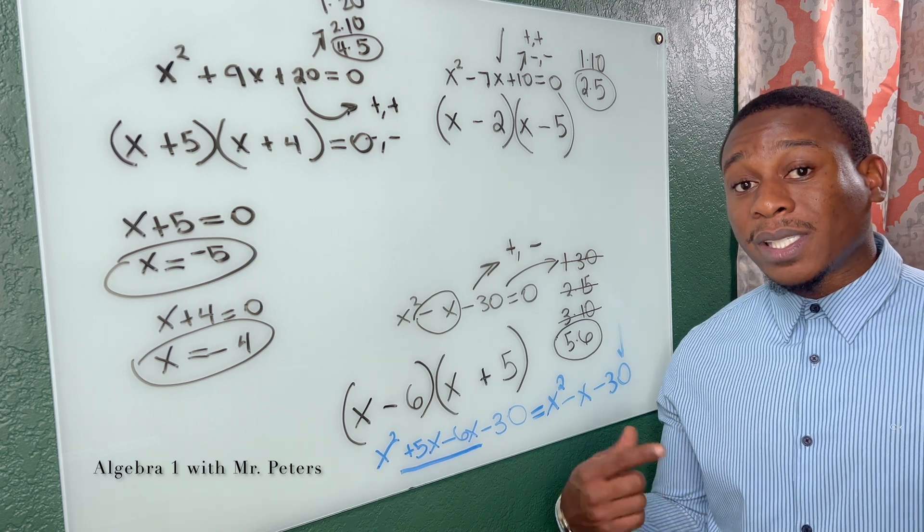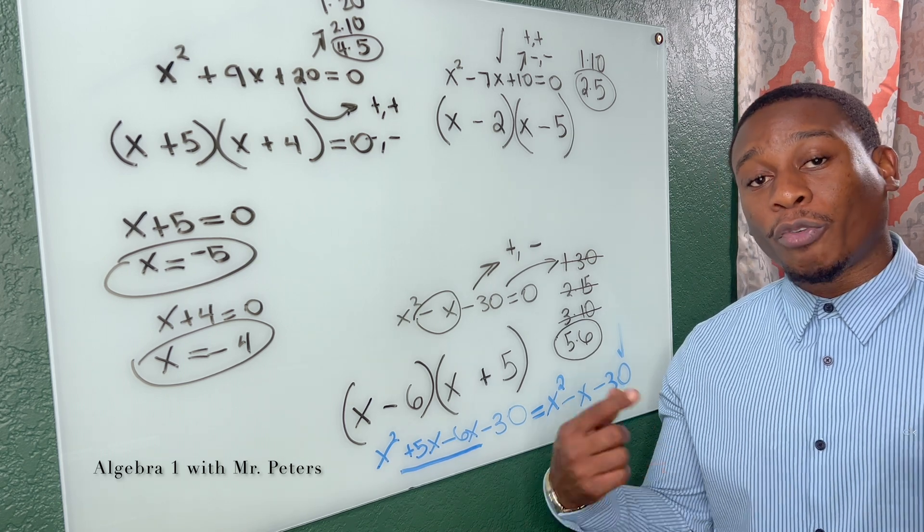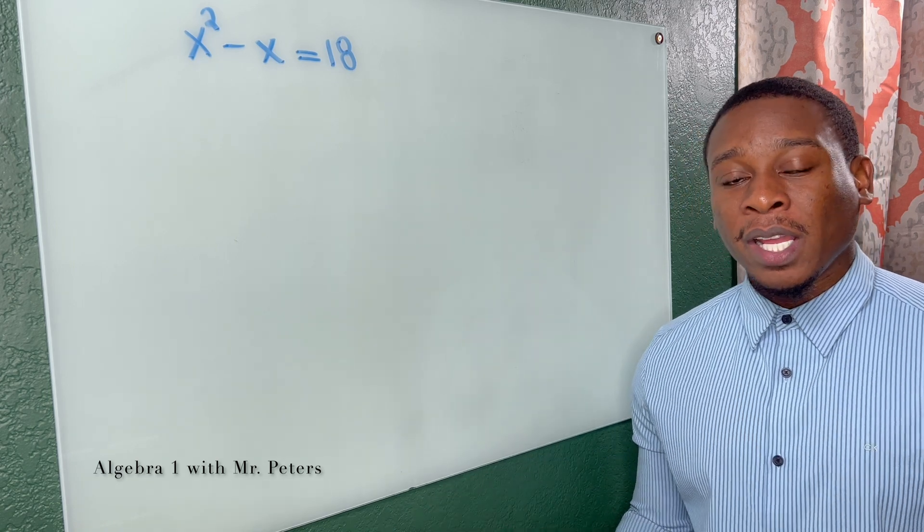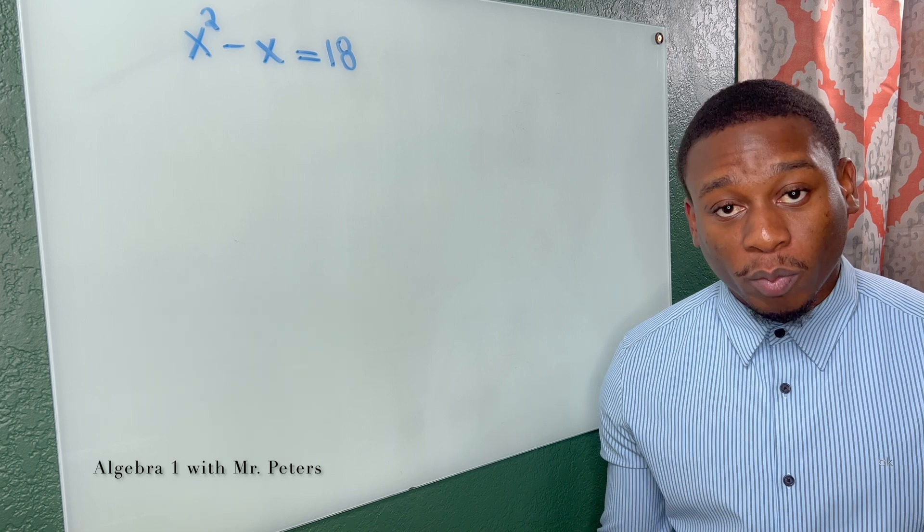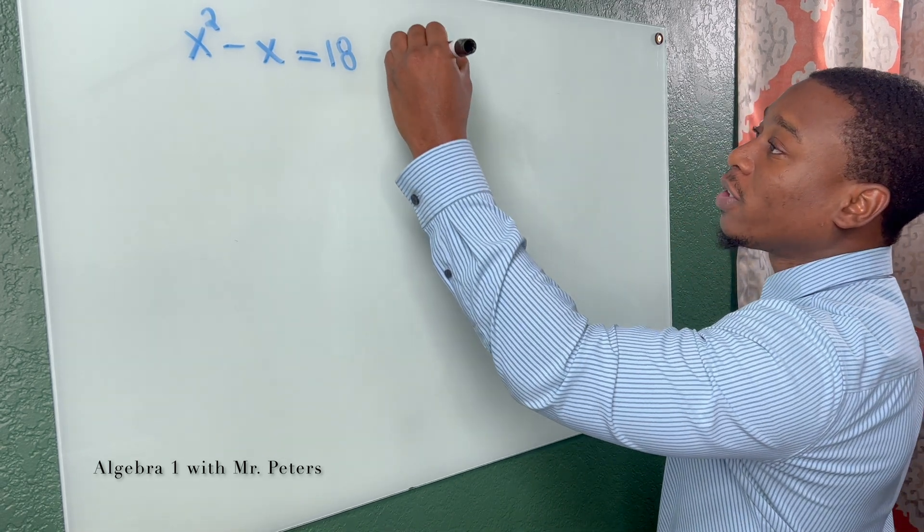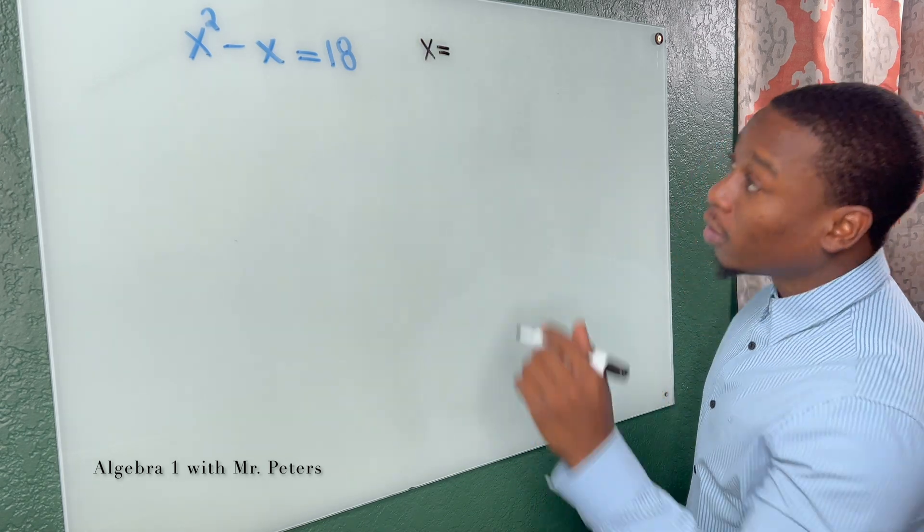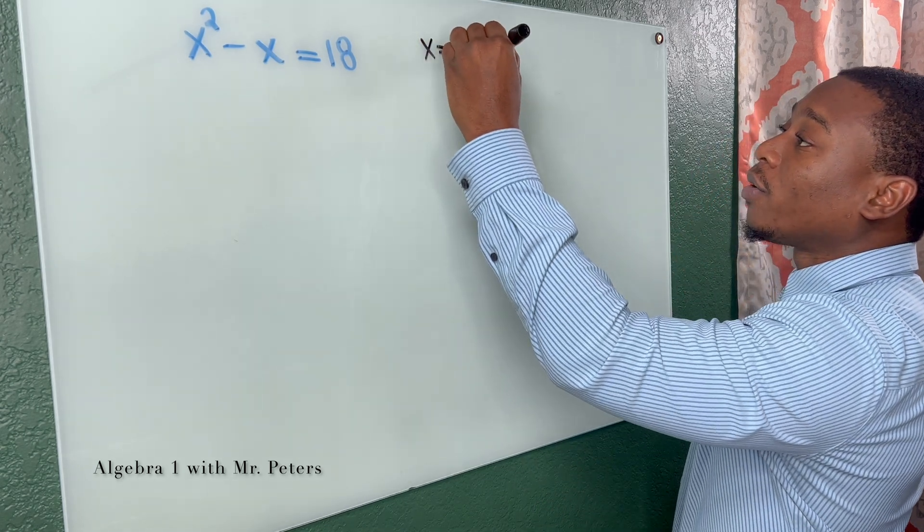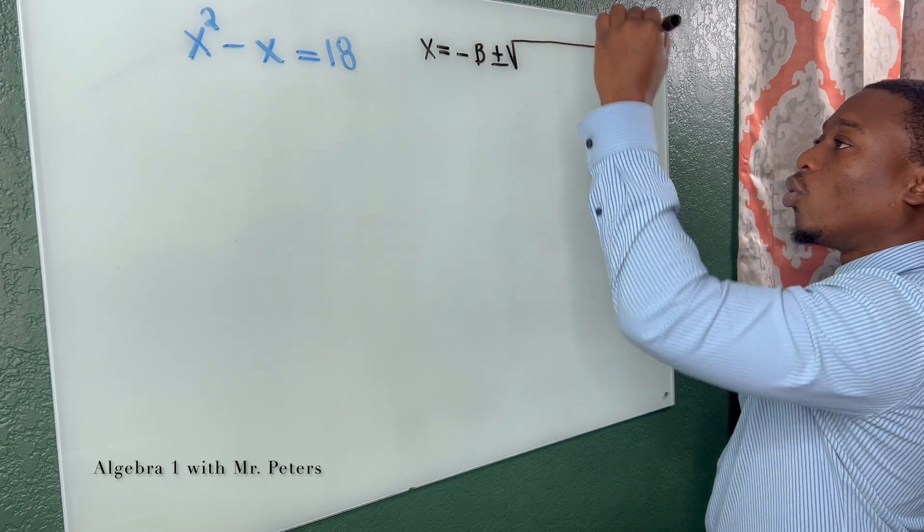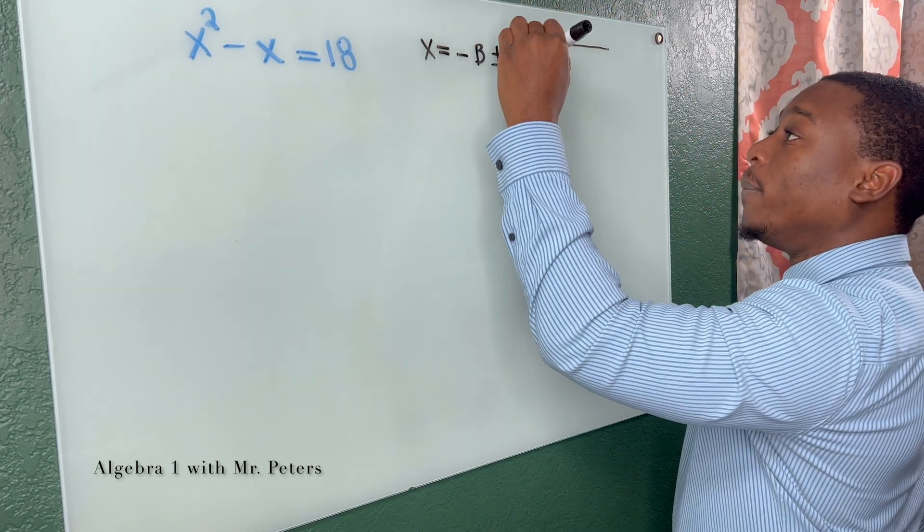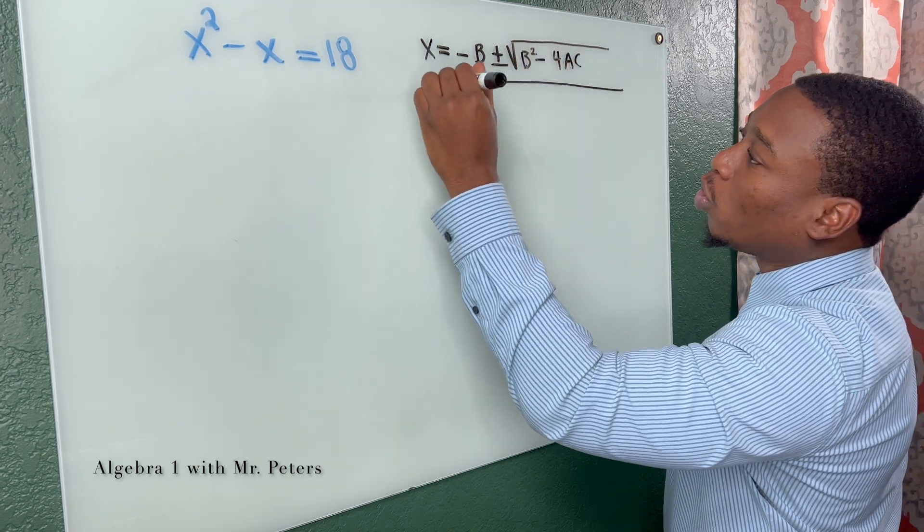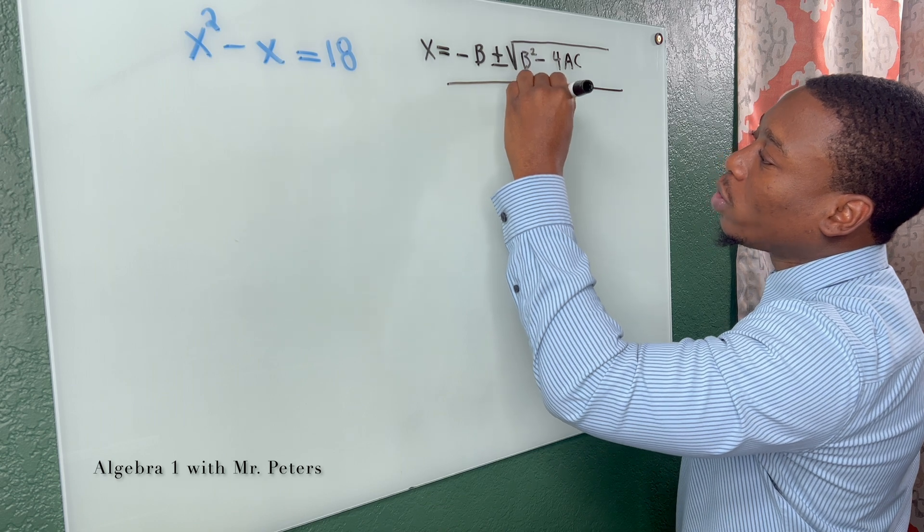And now we're going to go on to the second method for factoring. So the next method that we're going to look at is when we use the quadratic formula, and I'm going to show you guys that quadratic formula. So the formula is x is equal to the opposite of b plus or minus the square root of b squared minus four times a times c, and this whole entire thing is divided by two times a.